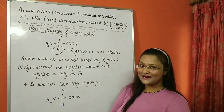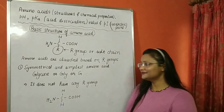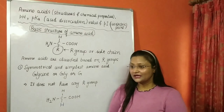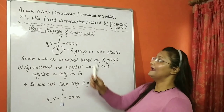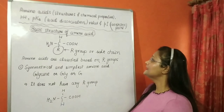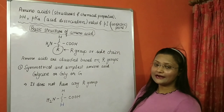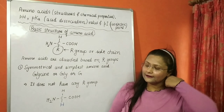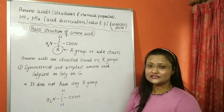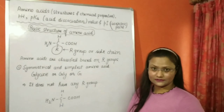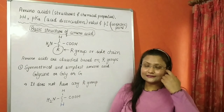Hello students, welcome back to my YouTube channel Complex Biology. In today's video we will discuss a very important topic of biochemistry which is related to pH, pKa — the acid dissociation constant — and pI, the isoelectric point. Apart from this, we will also learn about zwitterion, diprotic acids, and solve some problems based on pKa and pI.